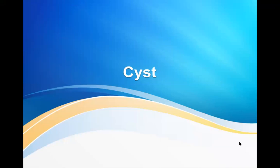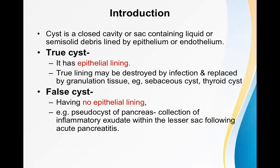This topic will cover the definition of a cyst, the types and classification of cysts, how to approach a patient who comes to the hospital with a cyst — taking history, physical exam, investigations — and finally some important types of cysts. A cyst is a closed cavity or sac containing liquid or semi-solid debris, which is lined by epithelium or endothelium.